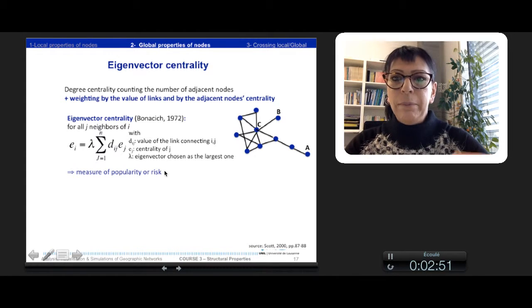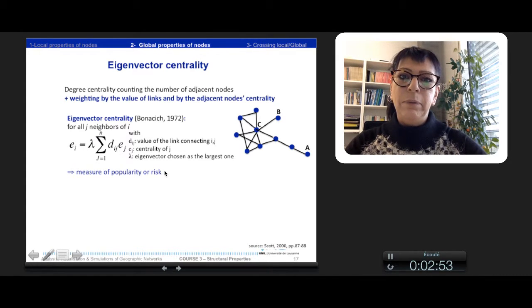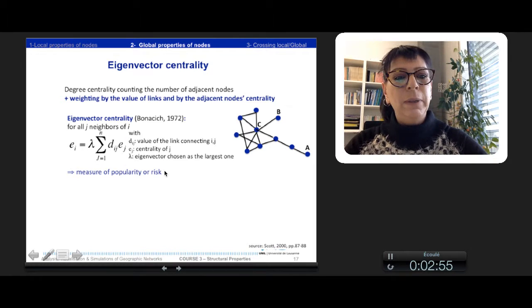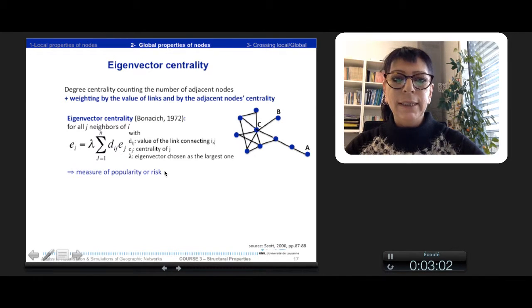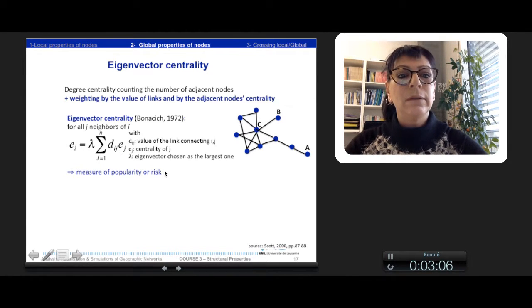If you know people who know many other people, you have more chance to be popular. But at the opposite, if we treat a thematic like diffusion of a disease, you have more risk to be contaminated by the disease.